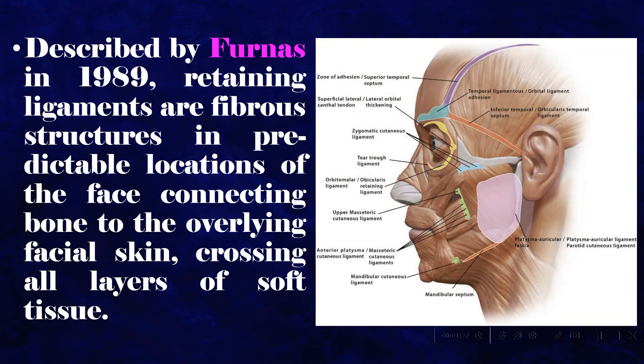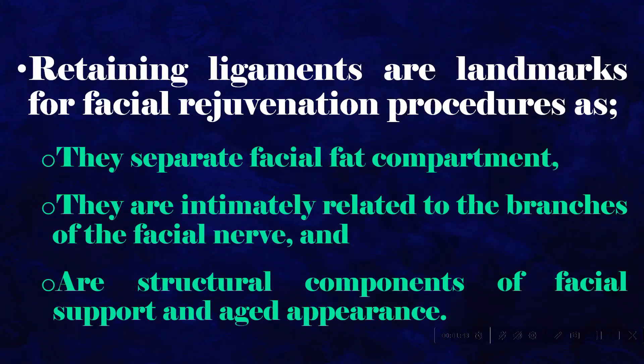Described by Furnace in 1989, retaining ligaments are fibrous structures in predictable locations of the face connecting bone to the overlying facial skin, crossing all layers of soft tissue. Retaining ligaments are landmarks for facial rejuvenation procedures as they separate facial fat compartments. They are intimately related to the branches of the facial nerve and are structural components of facial support and aged appearance.